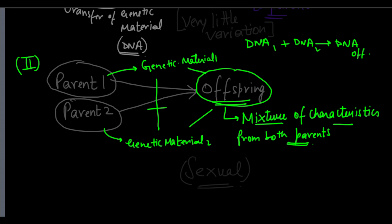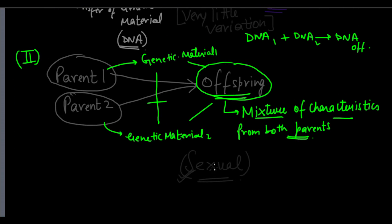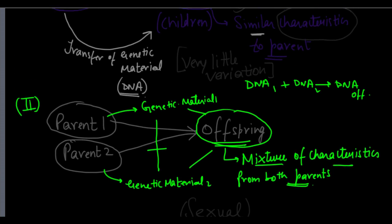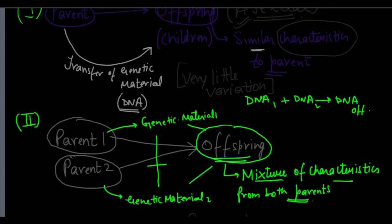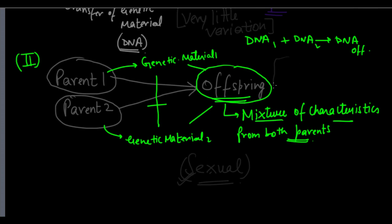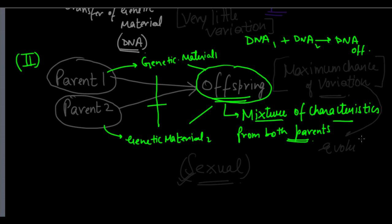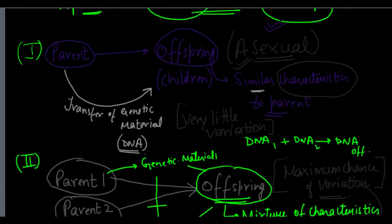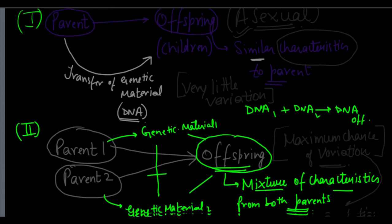So there are two main forms of reproduction: asexual form of reproduction and sexual form of reproduction. One very important thing in sexual reproduction is that there is a maximum chance of variation in the offspring as compared to the parents. That variation helps in generating evolution. Evolution is more prevalent in a sexual form of reproduction rather than an asexual form of reproduction.